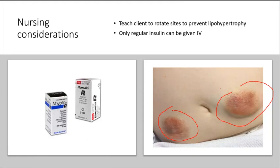Which are your regular insulins? Remember they are your short-acting and the R represents regular — your Humulin R and your Novolin R. Those are your regular insulins and they are the only ones that can be given IV. Although all insulins can be given subcutaneously, only regular insulin can be given IV.